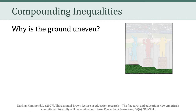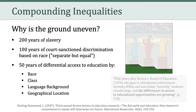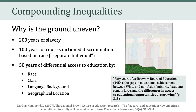Within the United States, the ground is uneven because of 200 years of slavery, 100 years of court-sanctioned discrimination based on race — the idea of separate but equal — and then 50 years of differential access to education as determined by race, class, language background, and geographical location. And quite powerfully, she argues that 50 years after Brown v. Board of Education, the gaps in educational achievement between white and non-Asian minority students remain large. And here's the big point: the differences in access to educational opportunities are growing — not shrinking, they're growing.